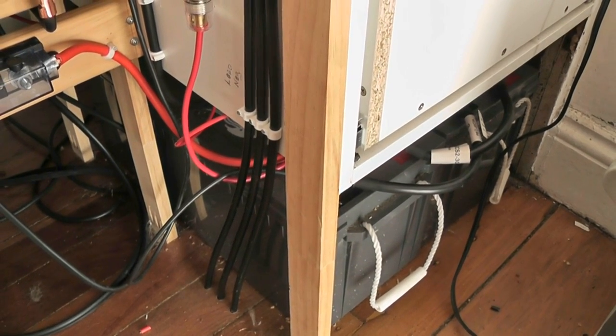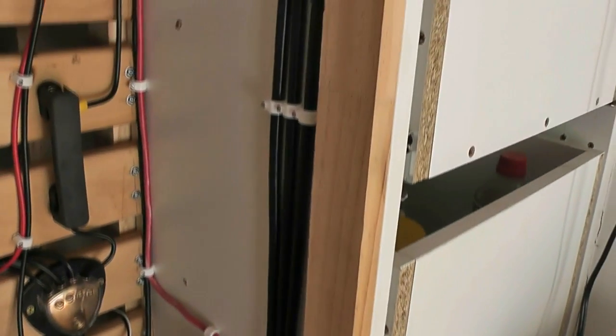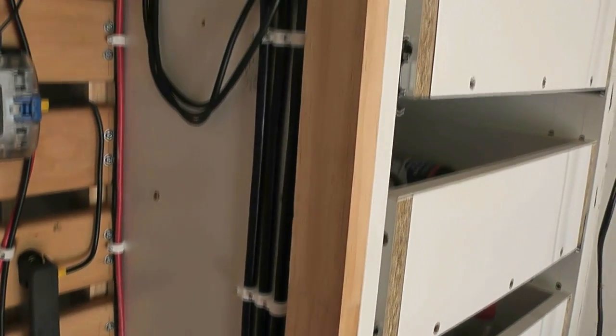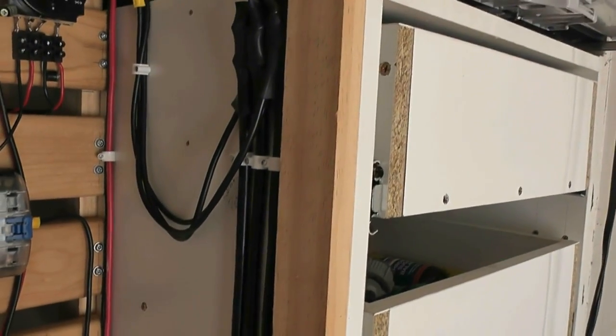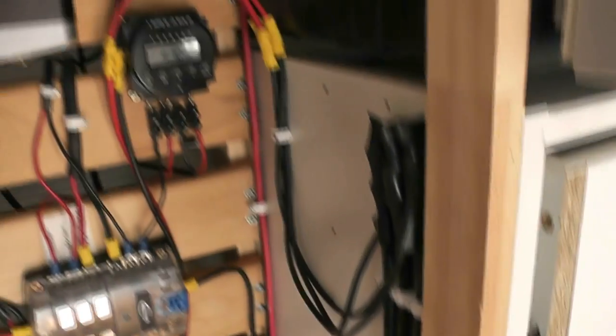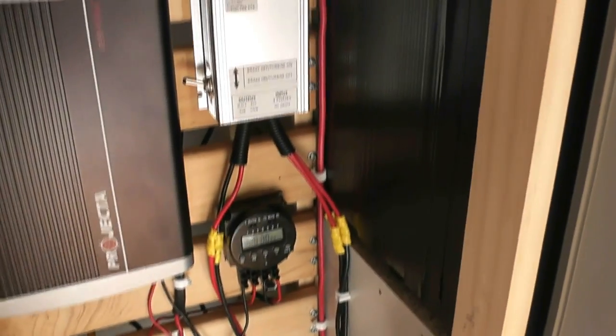So the heavy wires, the four gauge wires come up and then go across. If we just follow the wires across and up to this unit here.